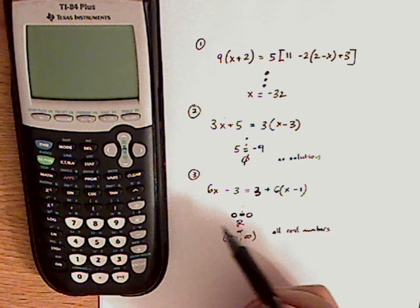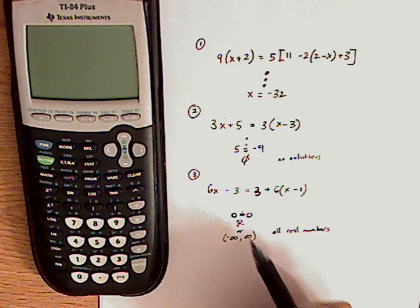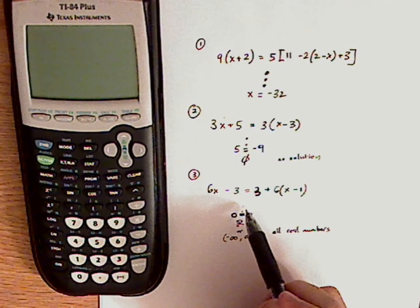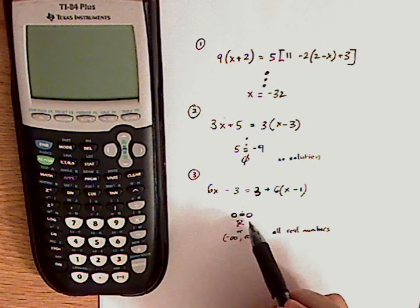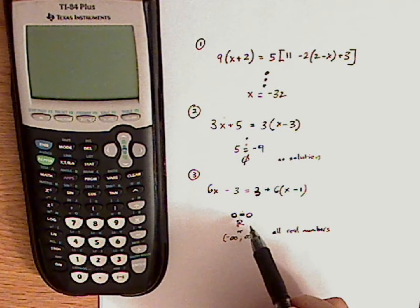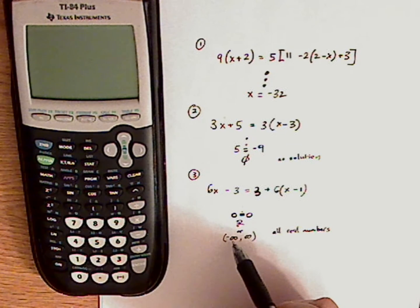And then the third type of linear equations that you might have is where both sides end up equal to each other like 0 equals 0. So that means that there's all real numbers for your solution.